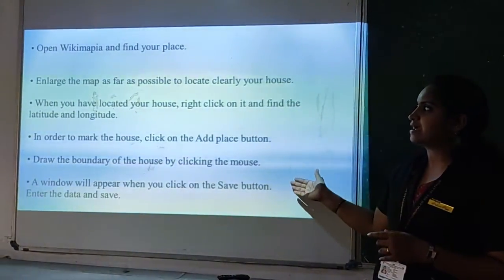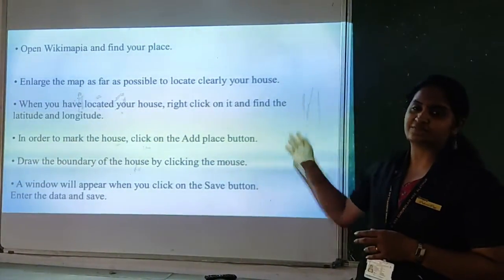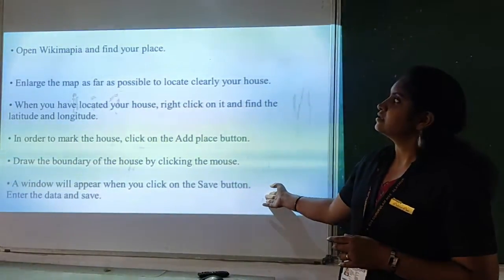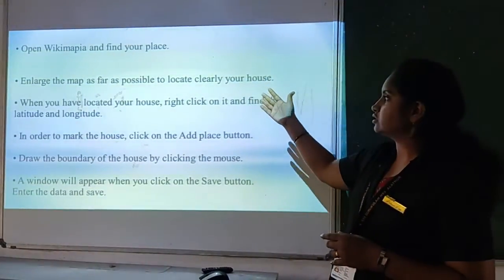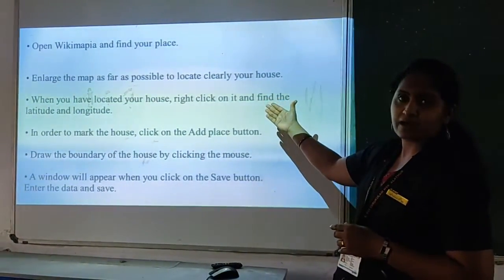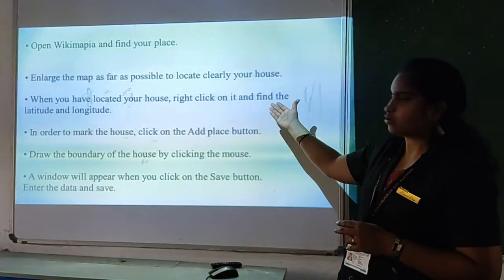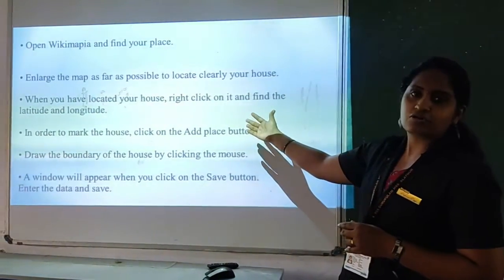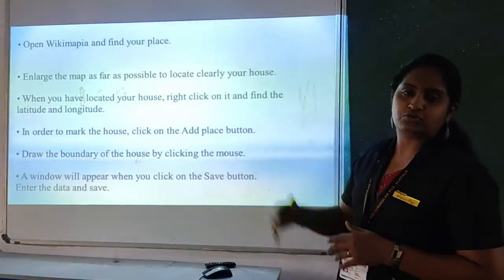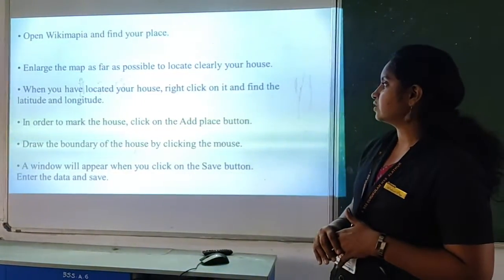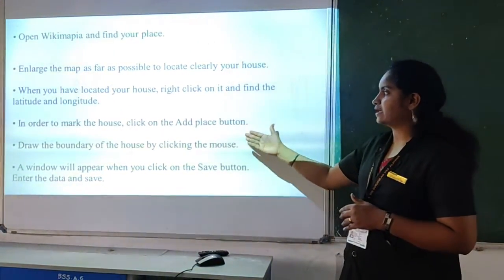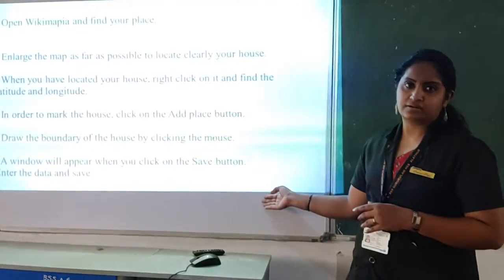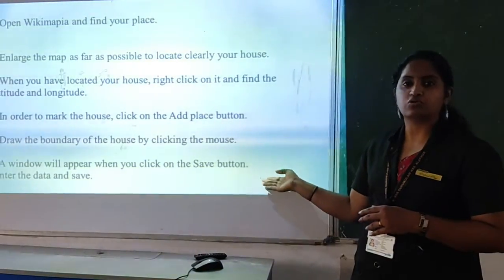In Wikimapia, how we can find the place — you have to write these steps. Adding a place: you can find the place by search, and you can enhance the map by zooming using the scroll mouse. You can right-click and find the latitude and longitude options. By using the 'add place' button, you can add the details of a particular place, house, or floor.